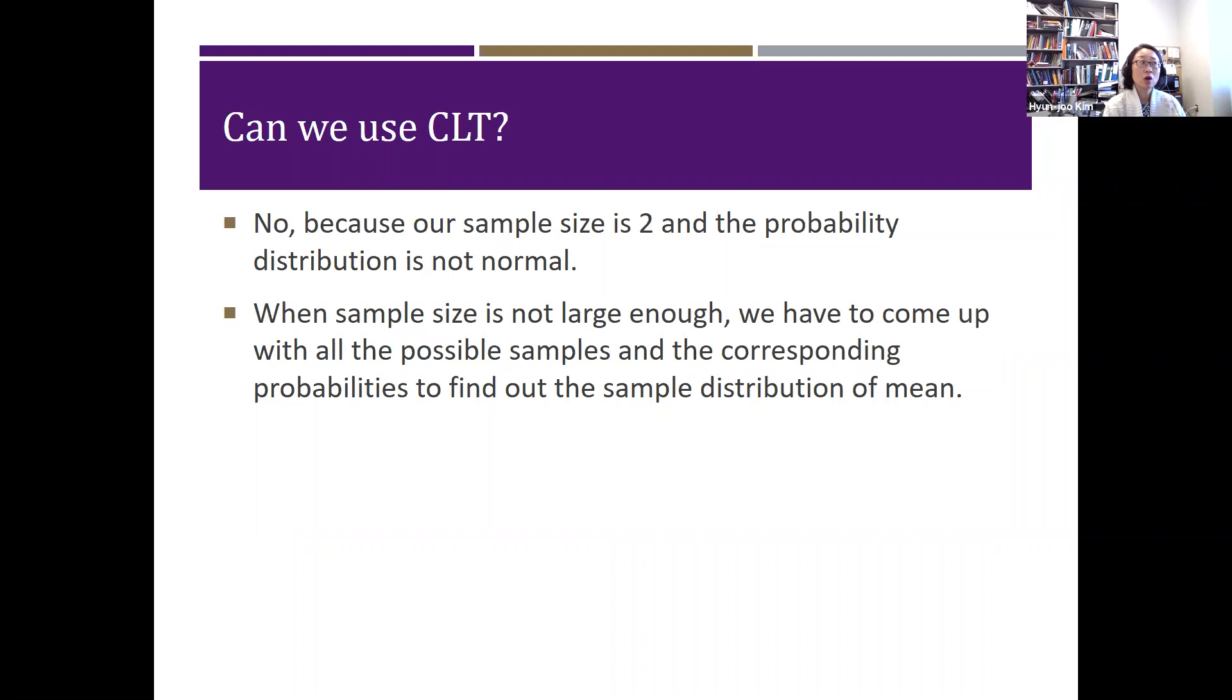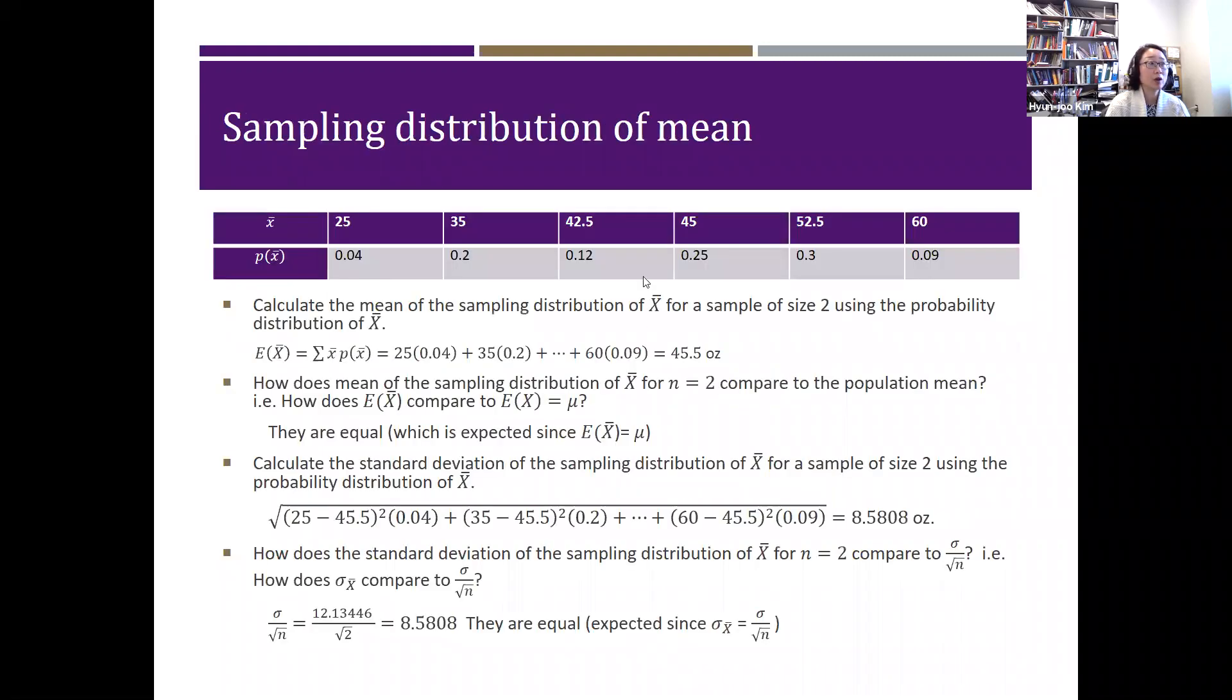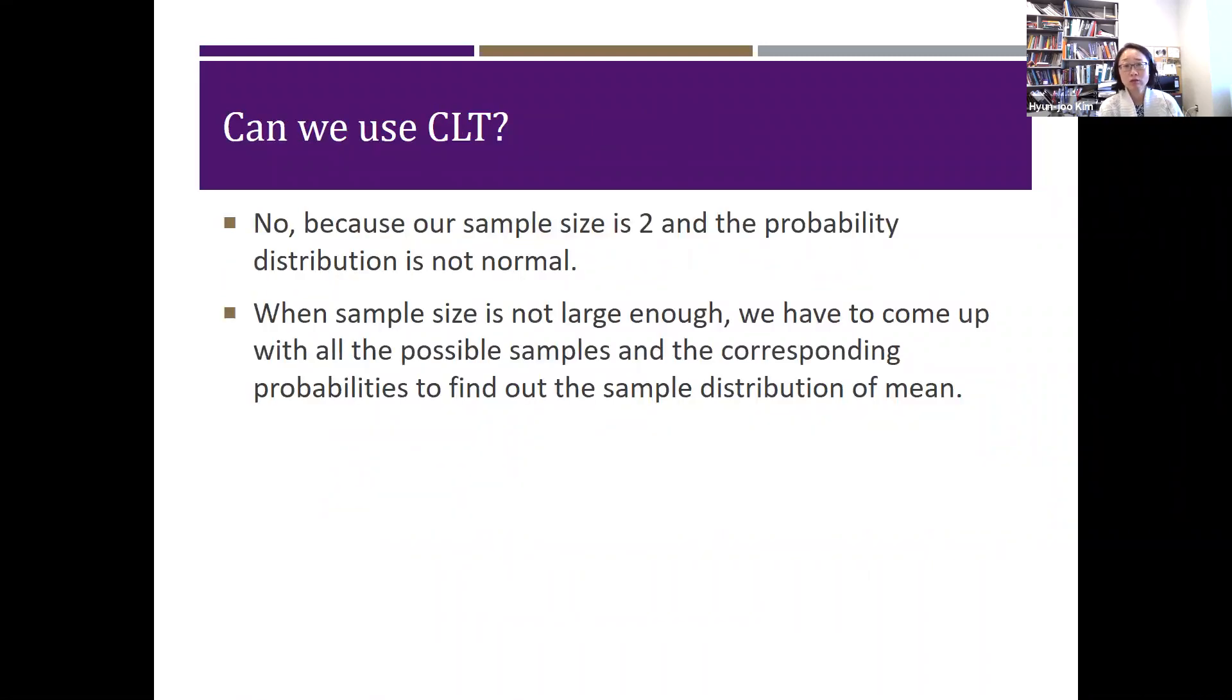But assuming that we understand the basic idea of sampling distribution with a small sample size, here when n is equal to 2, can we use central limit theorem? Rather than calculating some of the probability based on the probability distribution, for example, you can ask questions like what's the probability that X bar is less than 30? Then you can say 0.04, right? Because less than 30 is only 0.04. Can we calculate the probability using like a normal distribution central limit theorem? Can we do that? That's one of the mistakes that students will often make. For this case, you really can't use the central limit theorem method because sample size is way too little and your population wasn't really normal. It was just a discrete case. So when sample size is not enough, we have to come up with all the possible samples and you cannot really use a central limit theorem.